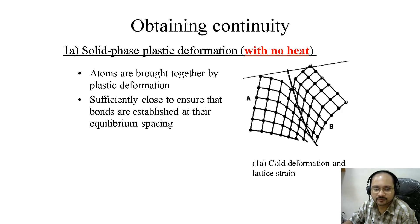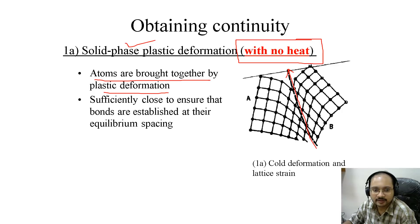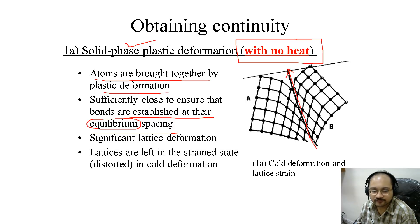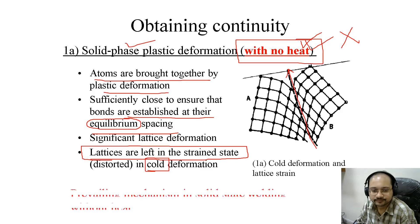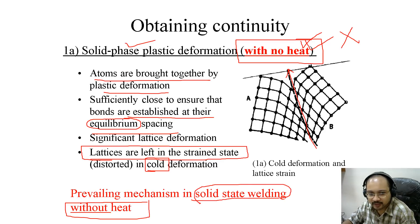Obtaining continuity via solid phase plastic deformation is very important — this is without any heat. With no heat, atoms are brought together by plastic deformation. You can see the grain boundary here — that is cold deformation, with lattice strain taking place. Atoms are brought sufficiently close to ensure that bonds are established at the equilibrium spacing. Lattices are left in the strained, distorted state under cold deformation. The prevailing mechanism in solid state welding without heat involves no application of heat.